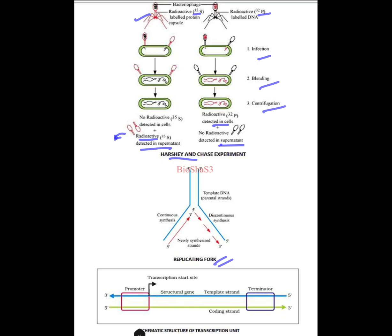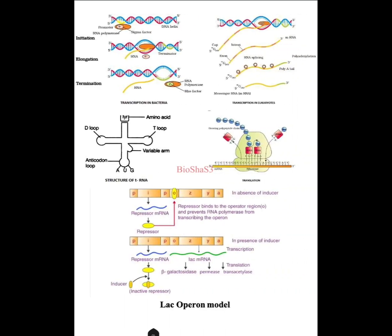You have to know about the replicating fork — one is a continuous synthesis, another is discontinuous synthesis; the newly synthesized strand is shown in red and the template DNA is the parental strand — this is a Y-shaped structure. You have to know about the transcription unit: 5' to 3' direction, showing the promoter, then terminator, and in between the structural genes. You have to show the transcription start site — out of two strands, one is the template strand and the other is the coding strand. This comes for three marks.